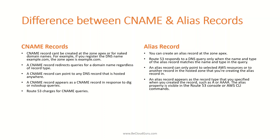Lastly, Route 53 charges for CNAME queries but does not charge for Alias queries to AWS resources. Those are the key differences between CNAME and Alias records. This is also an important pointer for exams — if you are preparing for the AWS Certified Solutions Architect exam, most of the time AWS expects you to choose Alias record rather than CNAME. Read questions carefully, but 8 out of 10 times the Alias record will be the correct answer.